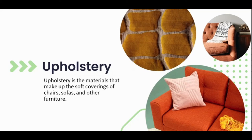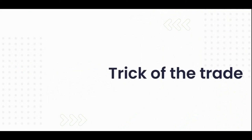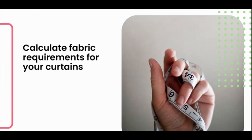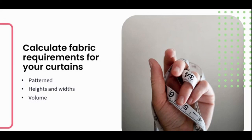Before we end today's lesson, we're going to look at a really handy trick of the trade — how to calculate the quantity of fabric you need to upholster your curtains. Measuring your windows and getting fabric quantities correct is vital to creating any window treatment. Start by standing in front of the window, visualizing the curtain type you want to create. Consider the pattern you want, the finished height and width, and how voluminous you want your curtains. As a general rule, fixtures should be the width of the window plus allowance for stacking space on either side.